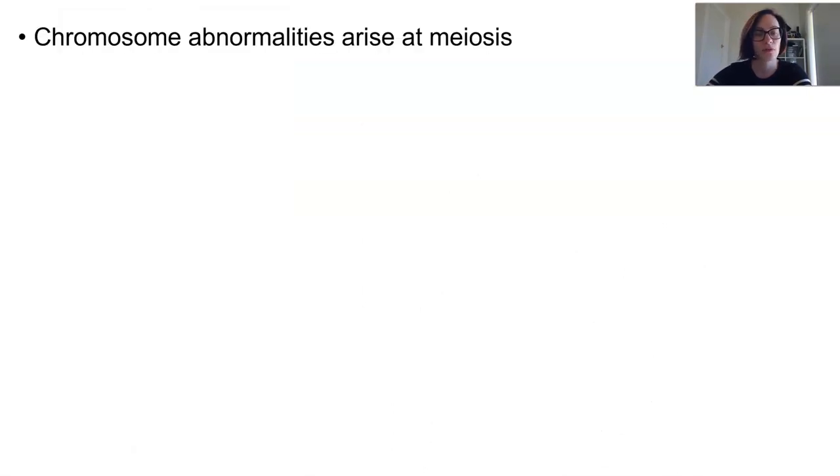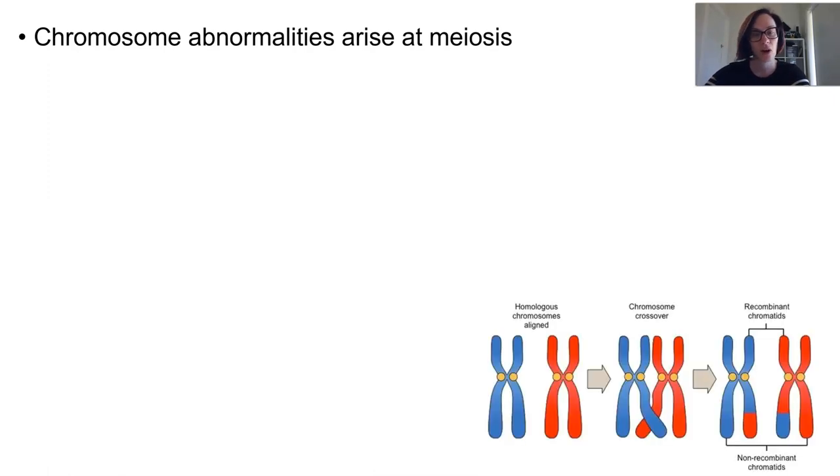Chromosome abnormalities are often called block mutations and large sections of chromosomes can be affected. These abnormalities usually arise during meiosis and very often during the bivalent formation as part of crossing over in meiosis 1.